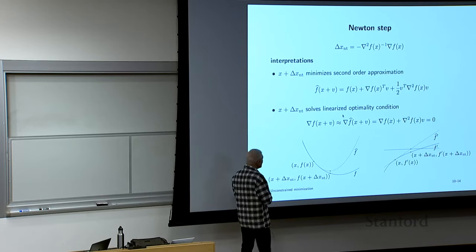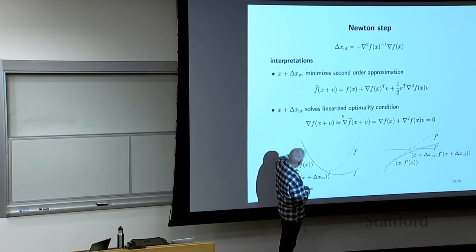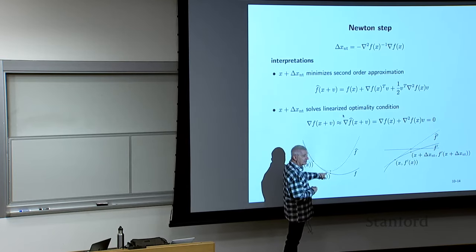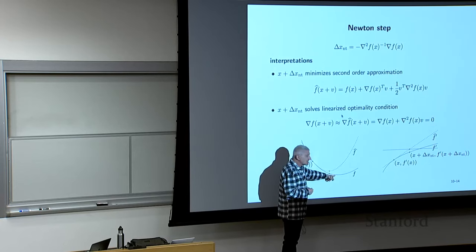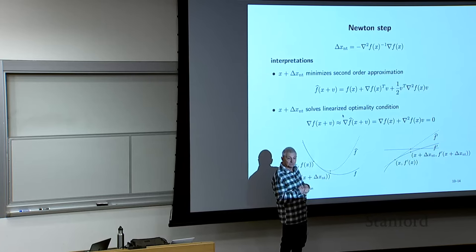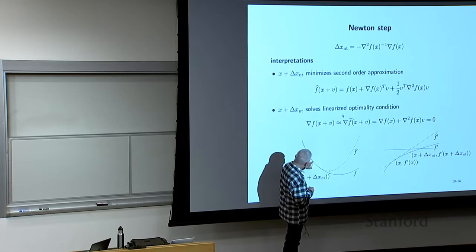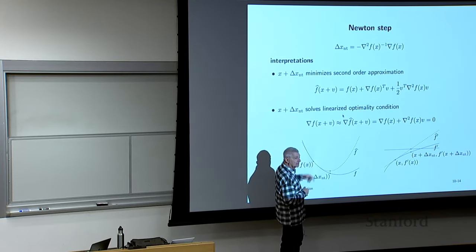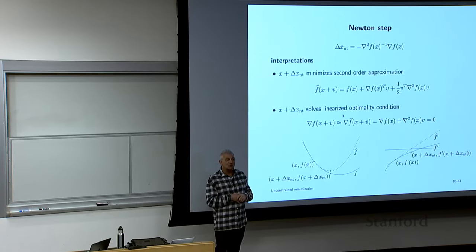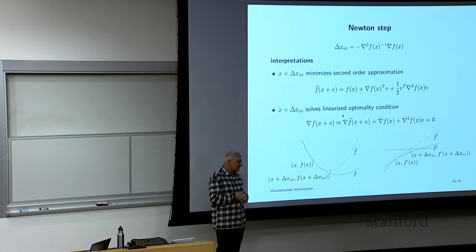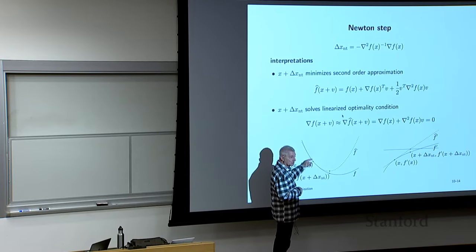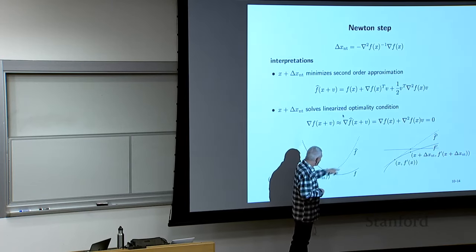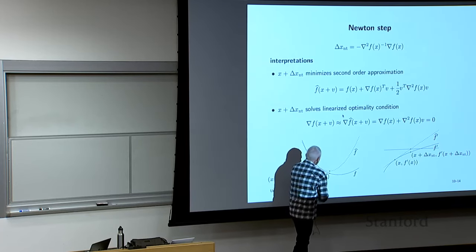Another way is to think about the optimality conditions. Here's the function F; we're at X. We get the second-order approximation F-hat. The first-order approximation has to be an underestimator of F; the second-order one could be above or below. F and F-hat are extremely close right near the current point — they agree to second order. The minimizer of this approximation gives us the Newton step, which is the difference between the current point and that minimizer.